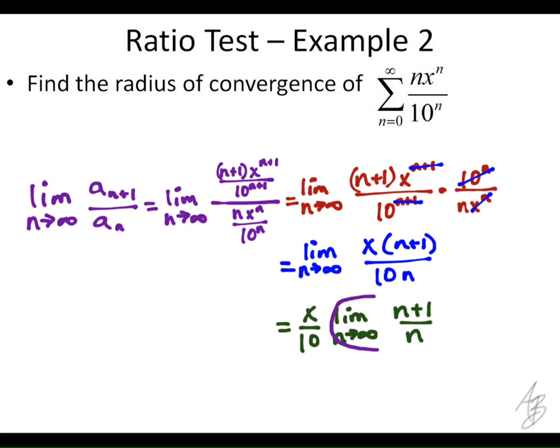This right here is going to be 1. So this limit is going to be x over 10. What does it mean that our ratio, our limit of ratios is x over 10?